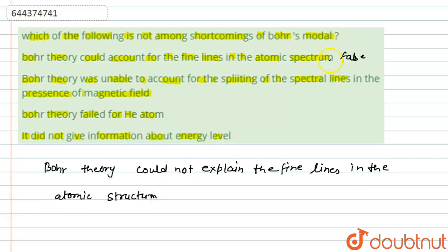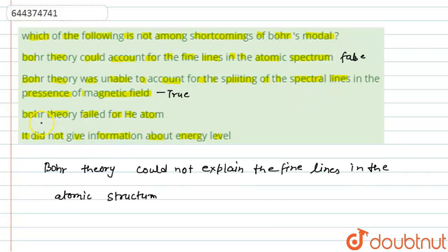The second option states that Bohr's theory was unable to account for the splitting of spectral lines in the presence of a magnetic field. This statement is true, because Bohr's theory was indeed unable to account for this splitting. This is known as the Zeeman effect.